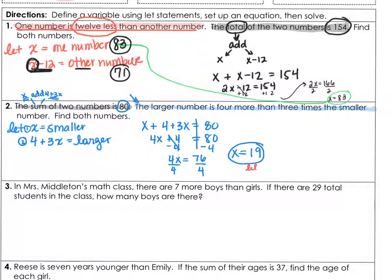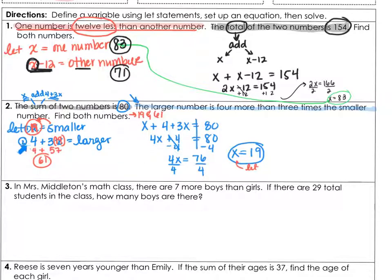We take this back to our let statement. We just found x, and we plug x in everywhere. Our smaller number is 19, and our larger number is going to be 3 times 19 plus 4. 3 times 19 is 57, plus 4 is 61. So find both numbers — the numbers are 19 and 61. Check to see that the larger number is 4 more than 3 times the smaller, which it is. And check to see if when you add these together you get 80, which you do. Those are our two numbers.